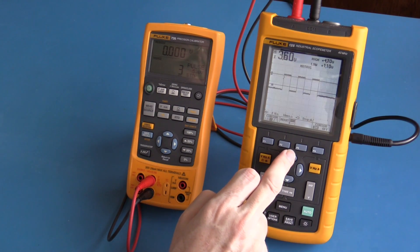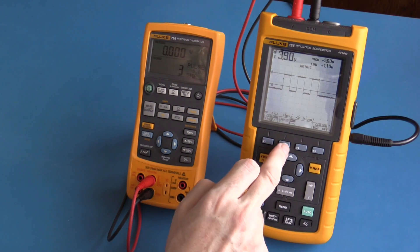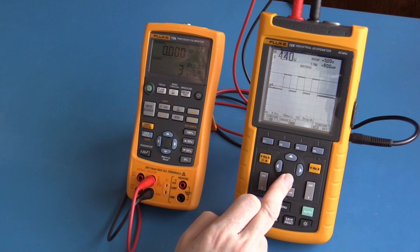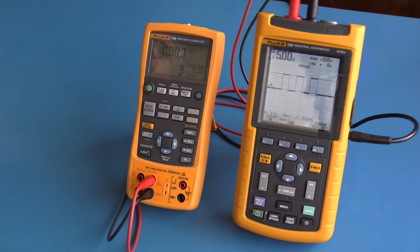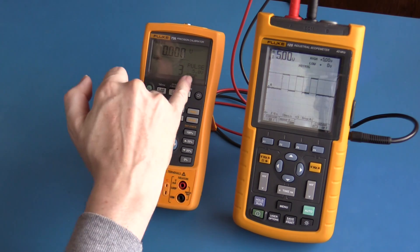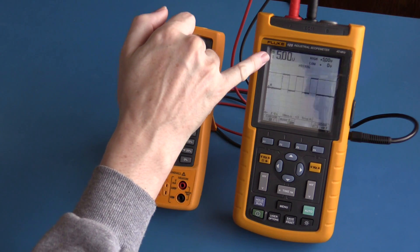A cursor can also be used to make a voltage measurement. The Fluke 726 is set to generate a 5 volt pulse. This agrees with our cursor measurement.